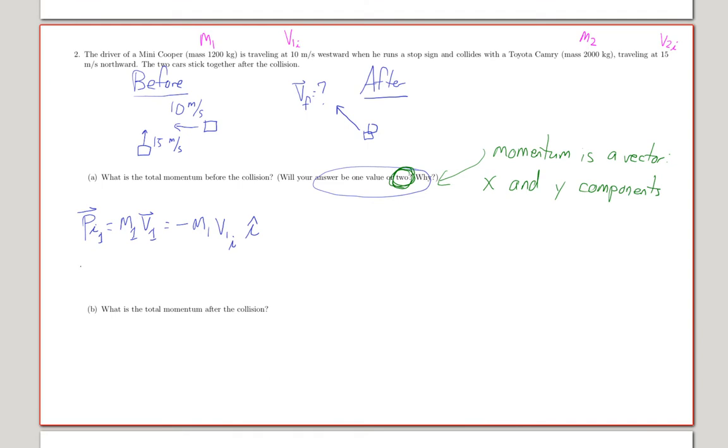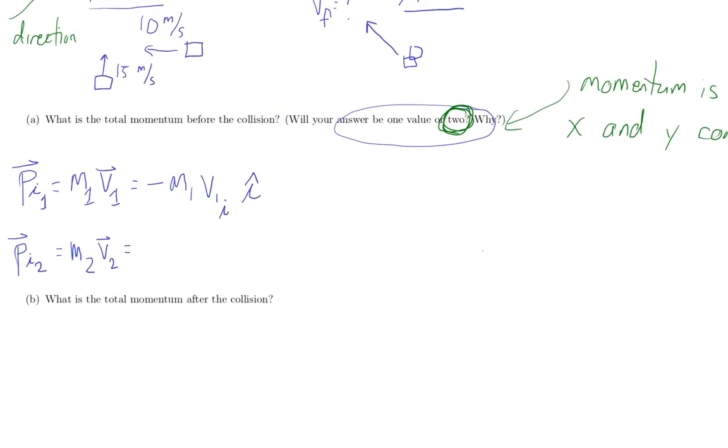For the second object, for the Camry, Pi2 is M2 times its velocity. It's going northward. So just to remind us here, this is the minus x direction because I'm using the conventional coordinate system, and that's the plus y direction.